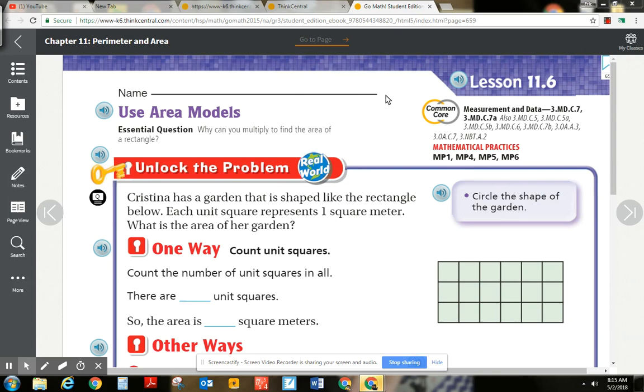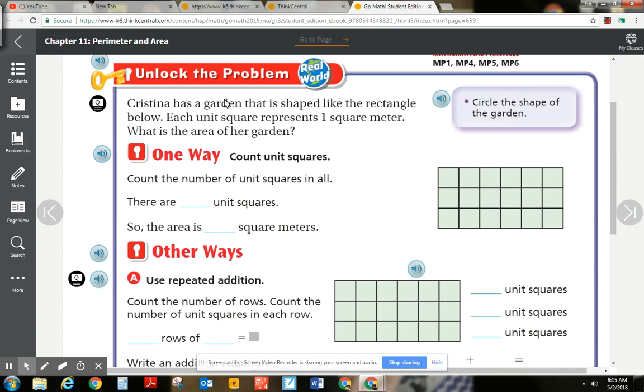Now let's take a look at this first problem. It says, Cristina has a garden that is shaped like the rectangle below. So rectangle. Each unit square represents one square meter. So that's my unit of measure is a meter. What is the area of her garden? So area is the space inside of her garden. There's a couple of different ways to do this.